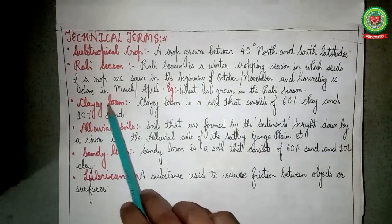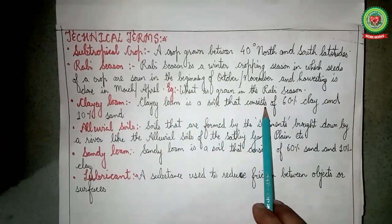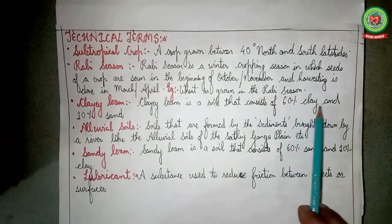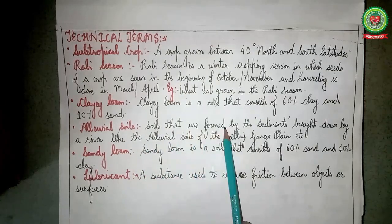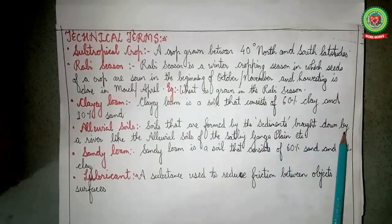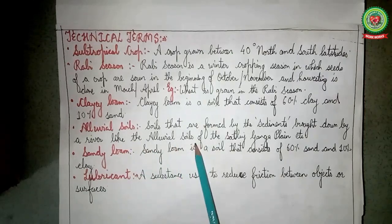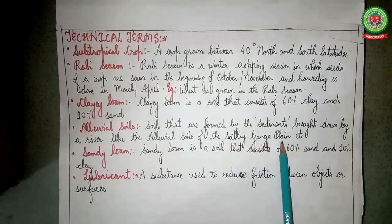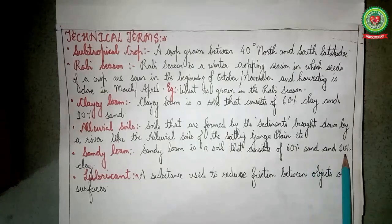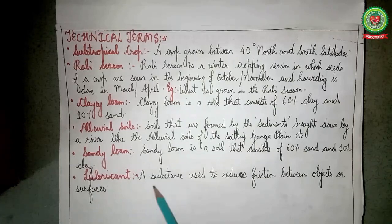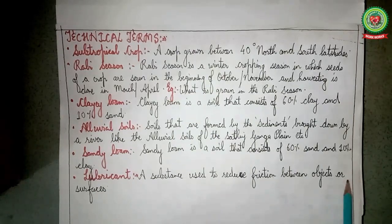Next: clay loam — a soil that contains 60 percent clay and 10 percent sand. Alluvial soils — soils formed by sediments brought down by a river, like the alluvial soils of the Sutlej-Ganga Plain. Sandy loam — a soil that consists of 60 percent sand and 10 percent clay. And finally, lubricant — a substance used to reduce friction between objects or surfaces.